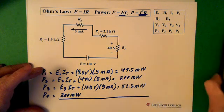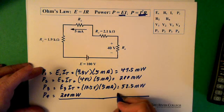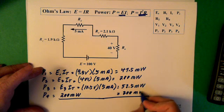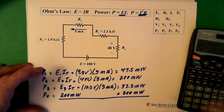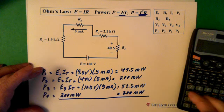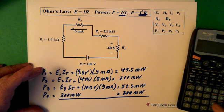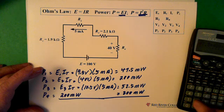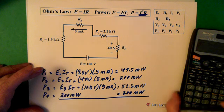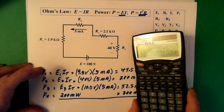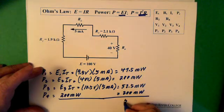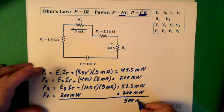So we just need to add up the numbers. So 47.5 plus, let's make this 400 plus 52.5 equals, there we go, 500. 500 milliwatts.